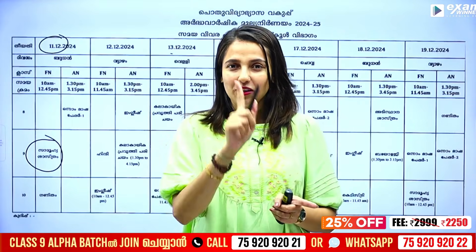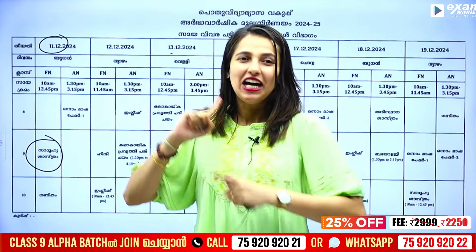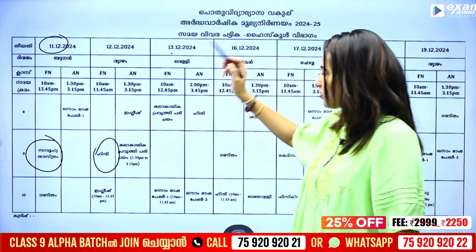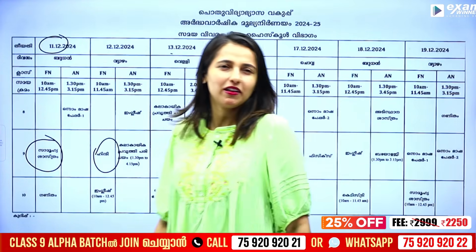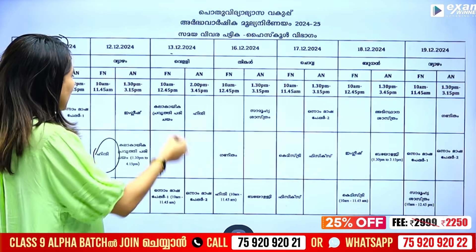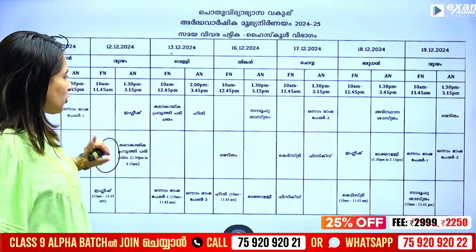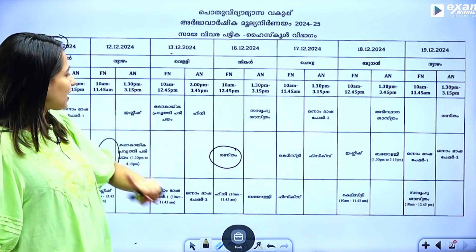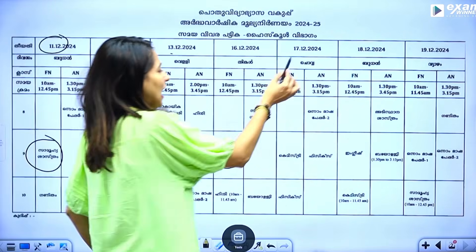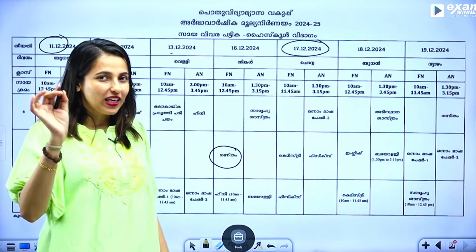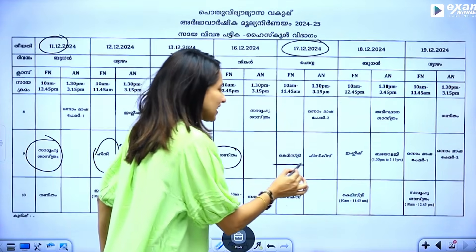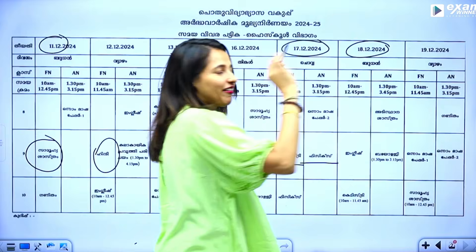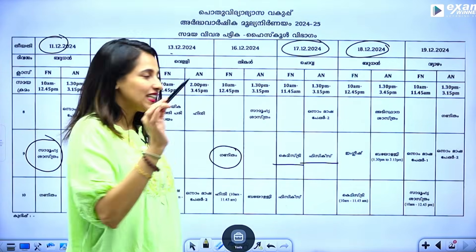We have to do the exam for two exams. Since the exam is considered social science, you do not have to do the exam for 12 exams. Since the exam comes up with maths, we have to do physics. We don't have the exam for 18 exams.